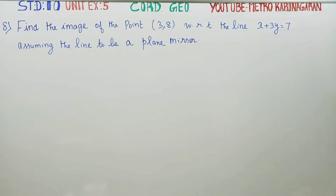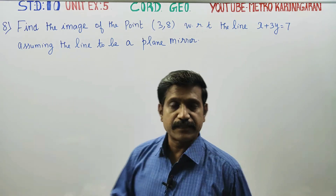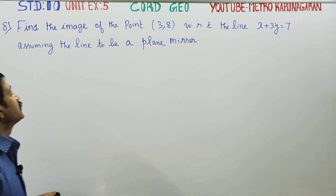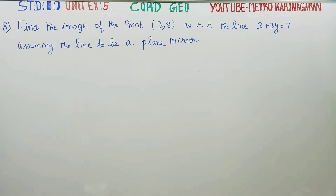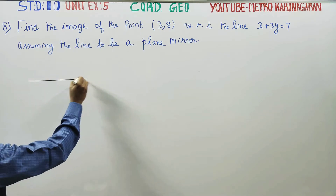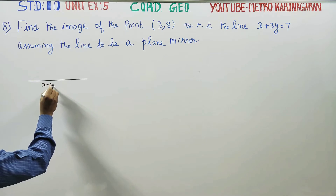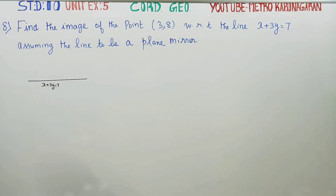Dear 10th standard students, in unit exercise number 5, coordinate geometry: find the image of the point (3, 8) with respect to the line x plus 3y is equal to 7, assuming the line to be a plane mirror. x plus 3y is equal to 7 is a straight line.